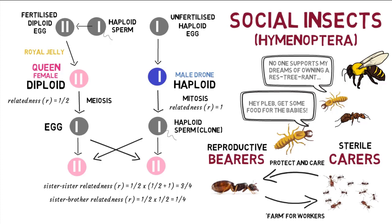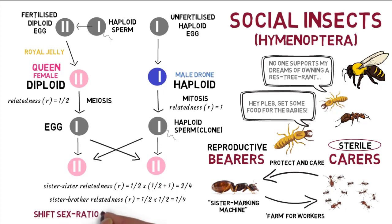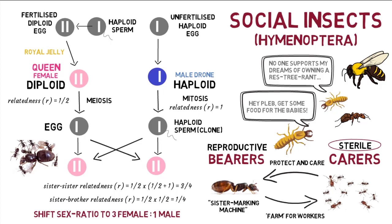Evolutionary pressure would predispose sisters to farm their mother as a semen-making machine, as the most efficient way to propagate their genes rather than breeding offspring directly themselves, leading to pressure toward the evolution of worker sterility. The sister workers would also attempt to curb the mother's natural tendency toward a one-to-one sex ratio and shift it toward a three-to-one female-to-male ratio. In studies by Robert Trivers and Hope Hare on 20 species of ants, they indeed found a close fit to the three-to-one female-to-male ratio.